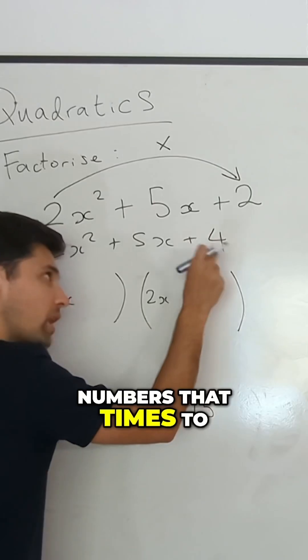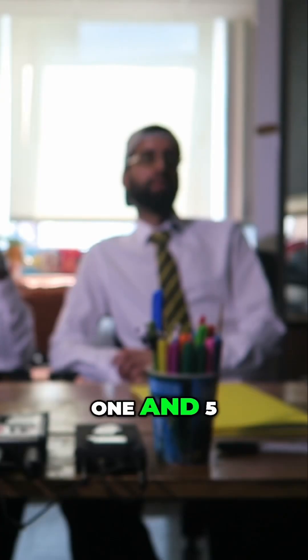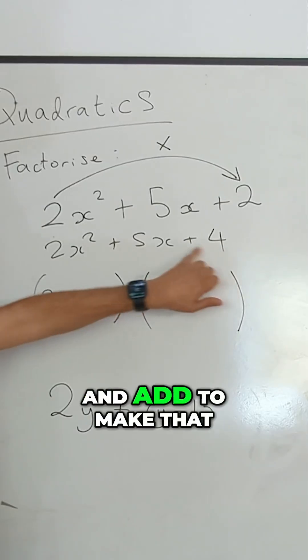But now, once again, we're looking for two numbers that times to make that, and add or subtract to make that. So what are we going to go for? Times to make this and add to make that.